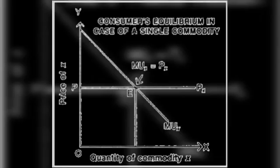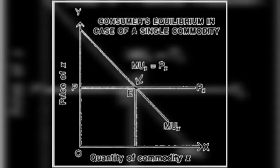First case: when the consumer purchases a single commodity. The consumer will be in equilibrium when they buy the quantity of that commodity which gives them maximum satisfaction — for example, buying mangoes that give maximum satisfaction. One more point: the consumer is in equilibrium when the marginal utility of the commodity equals the price of the commodity.